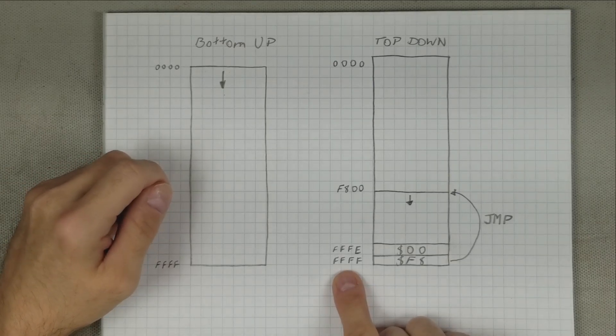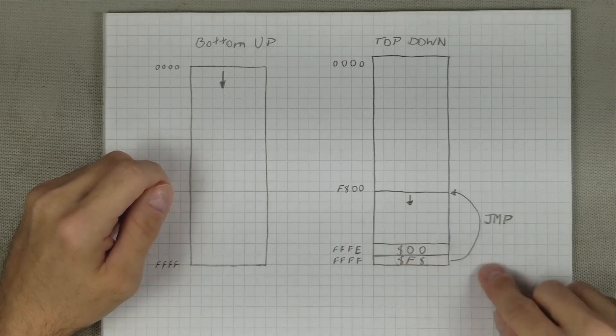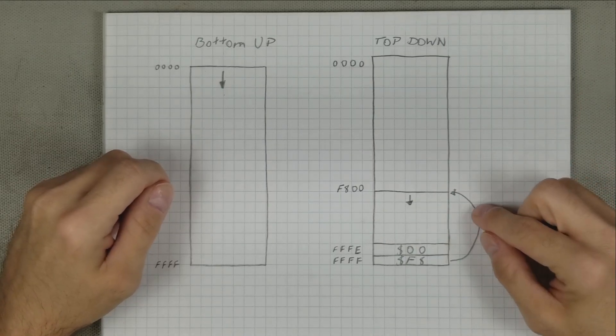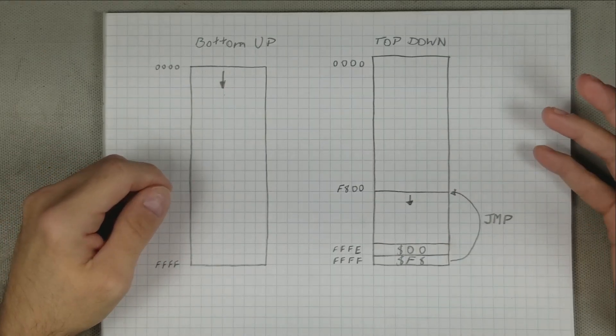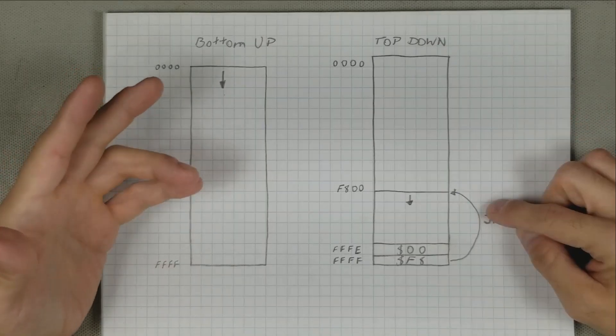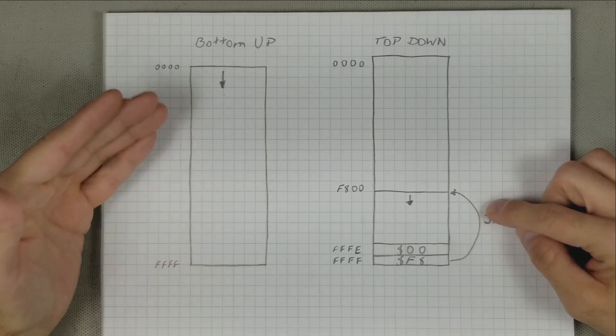In those two locations is the address F800. So the CPU then jumps to address F800 and begins code execution from there. Of course, this can be any address, as long as there is valid code to execute there. I picked F800 here, since this is where the ROM will start when we put the next circuit together.